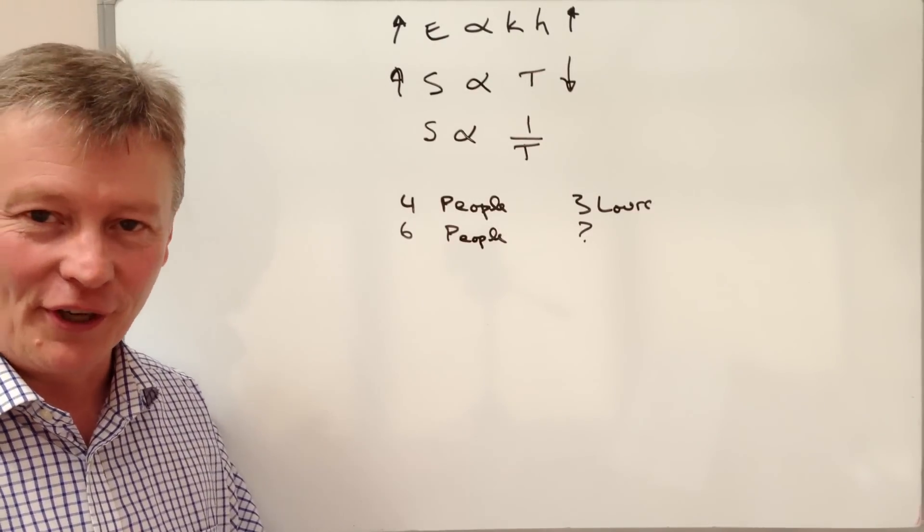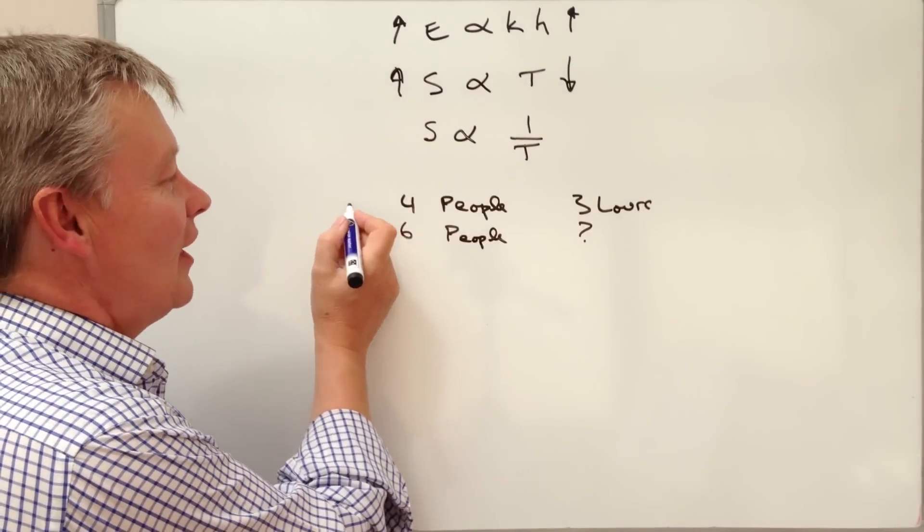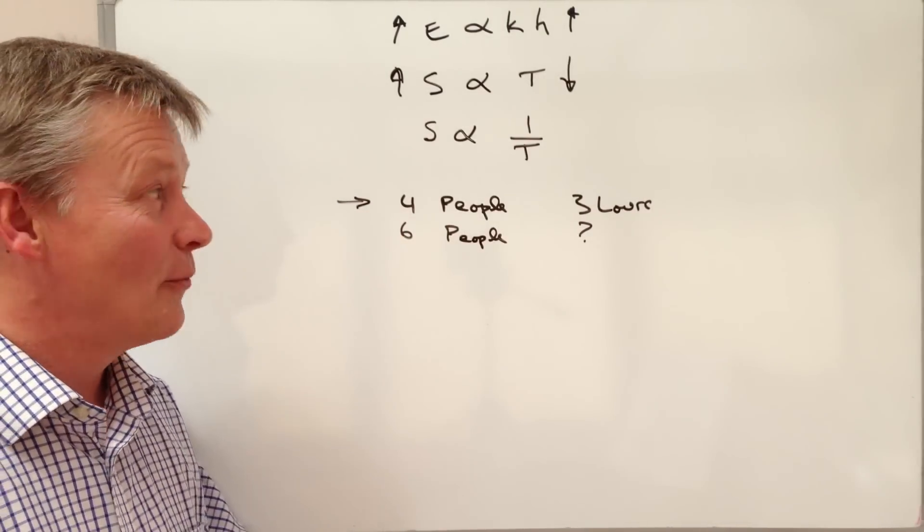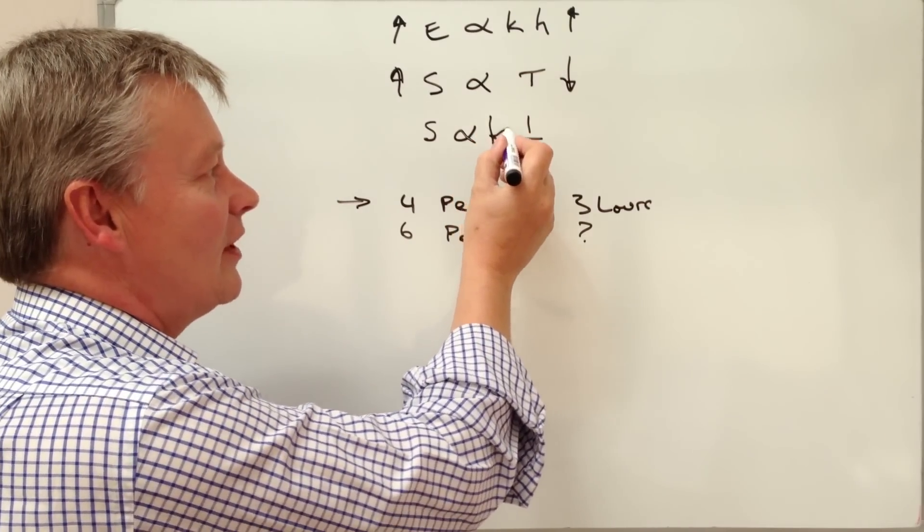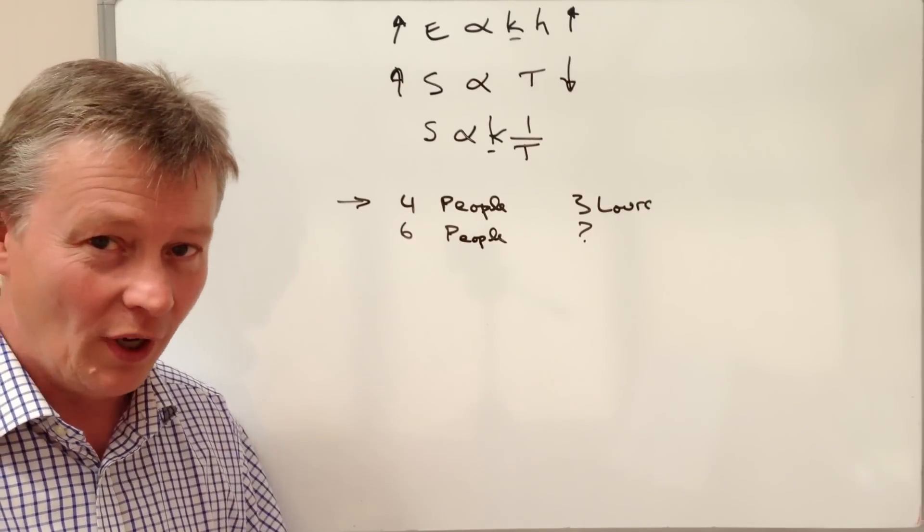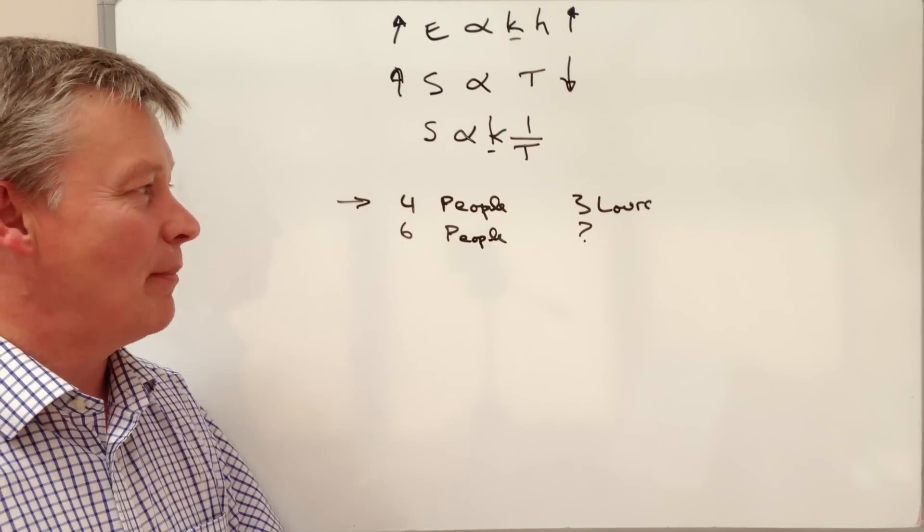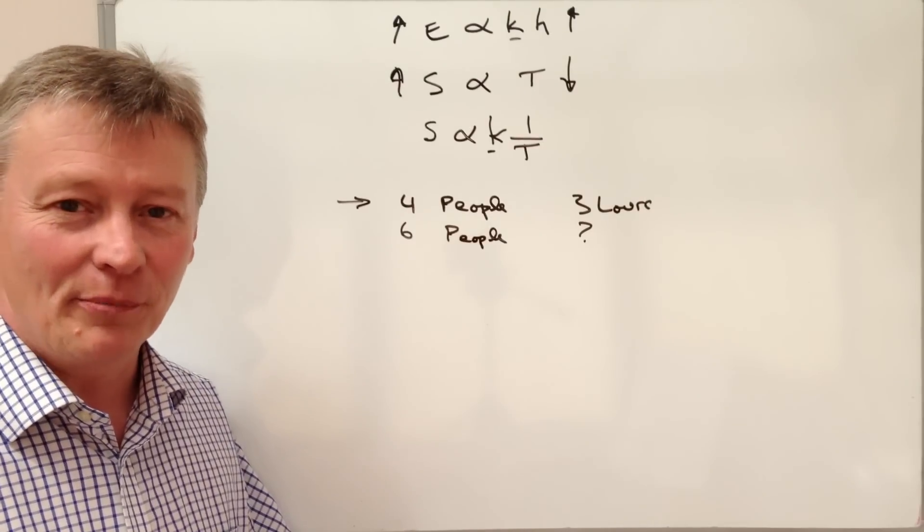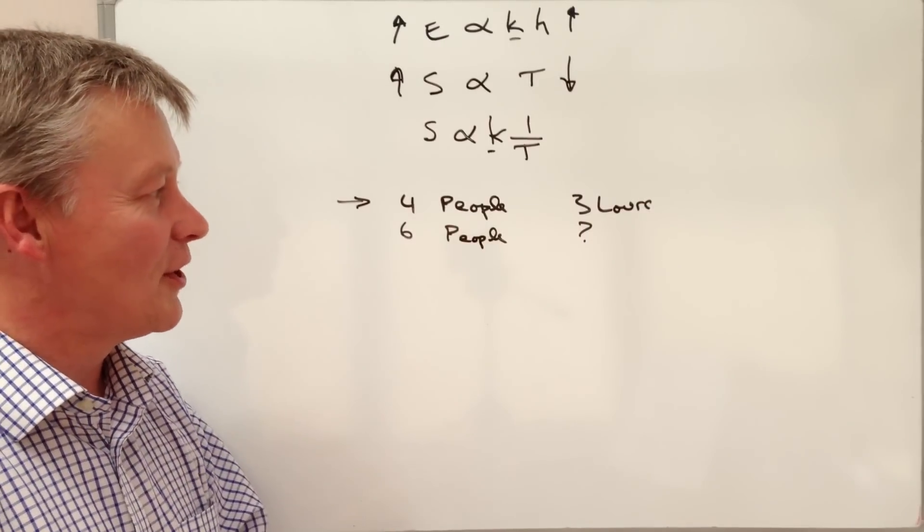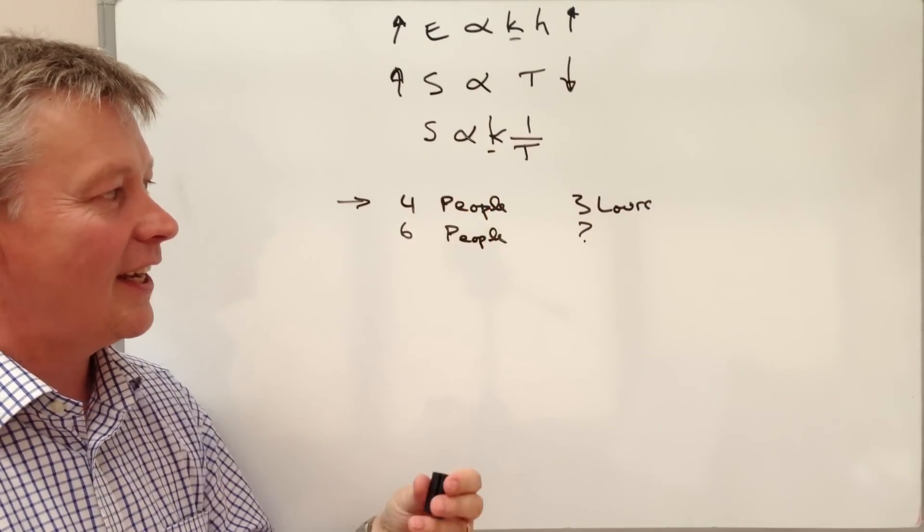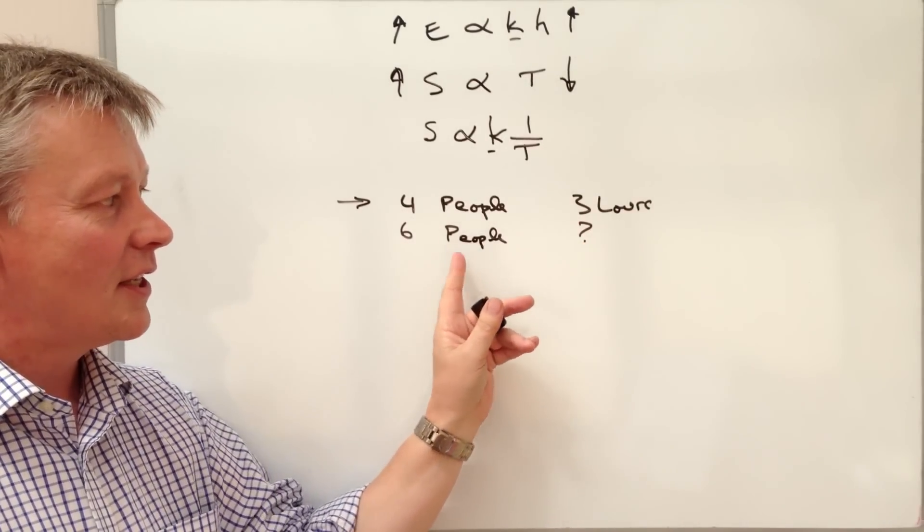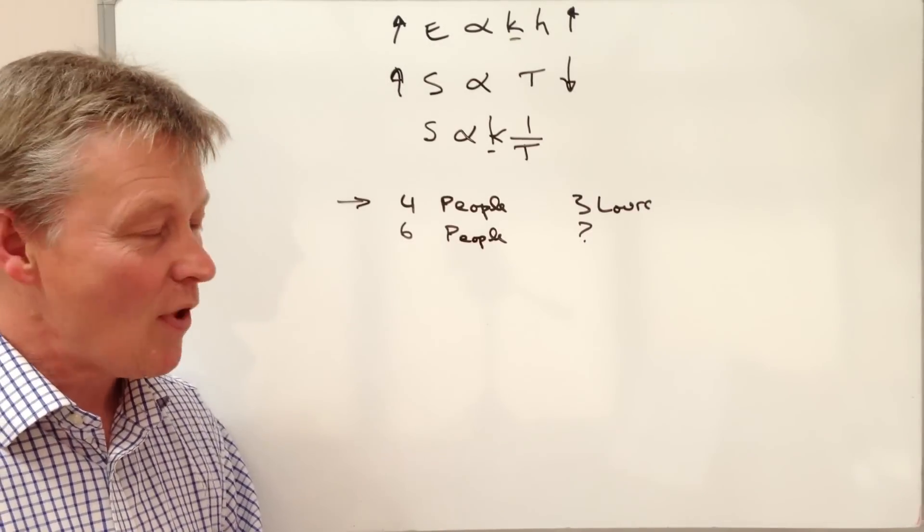The first bit of it will allow us to work out the value of K, which is the constant. Basically, it's the rate at which the 4 people work. So it could be the amount of fence panels that they're able to complete in a fixed amount of time, in this case 3 hours. We're going to work out this value of K and then use the value of K to find out how long it will take the 6 people to complete the same job.